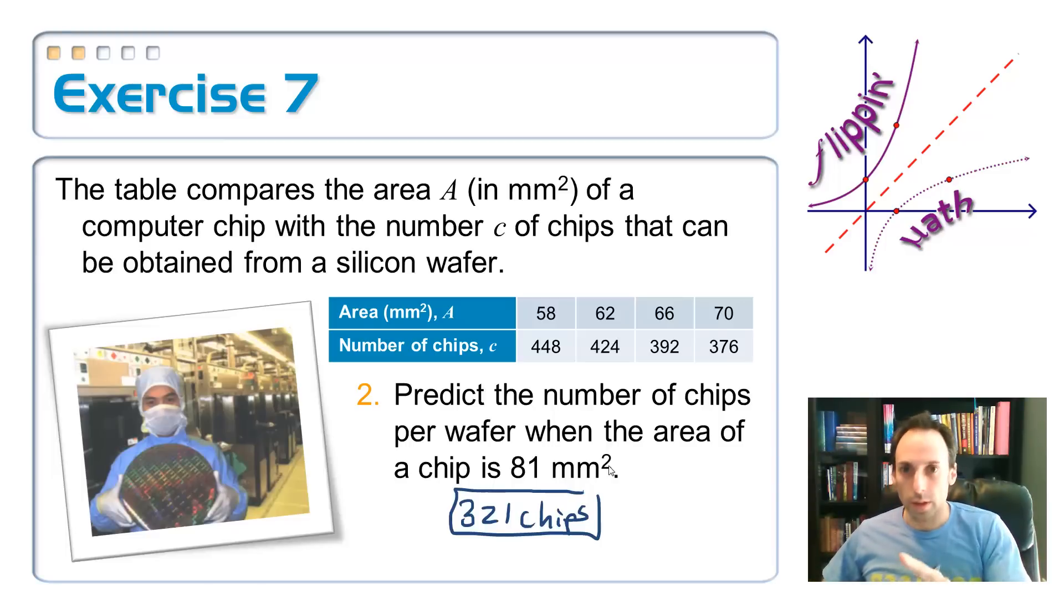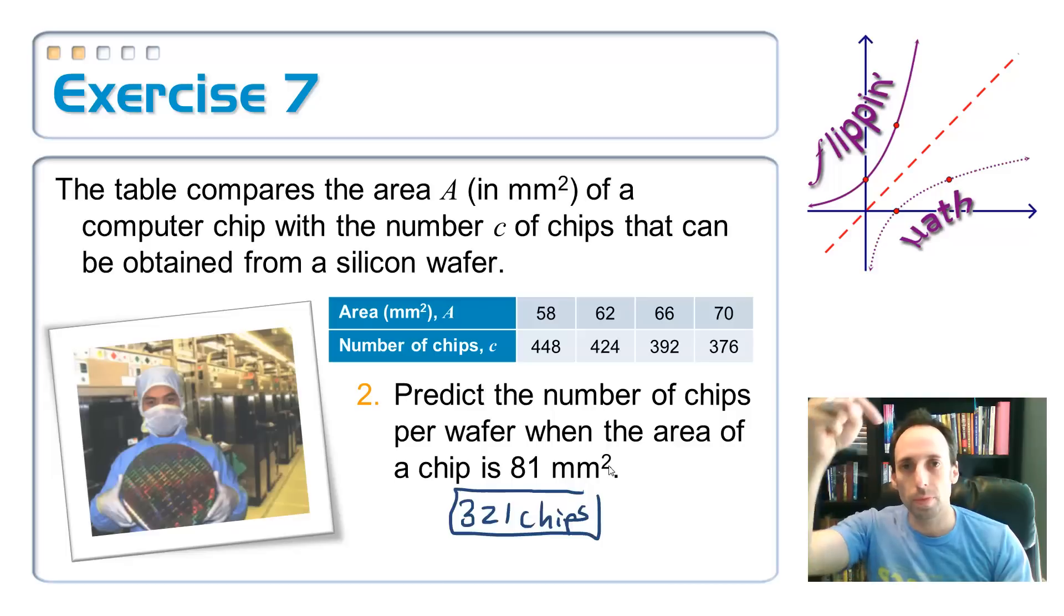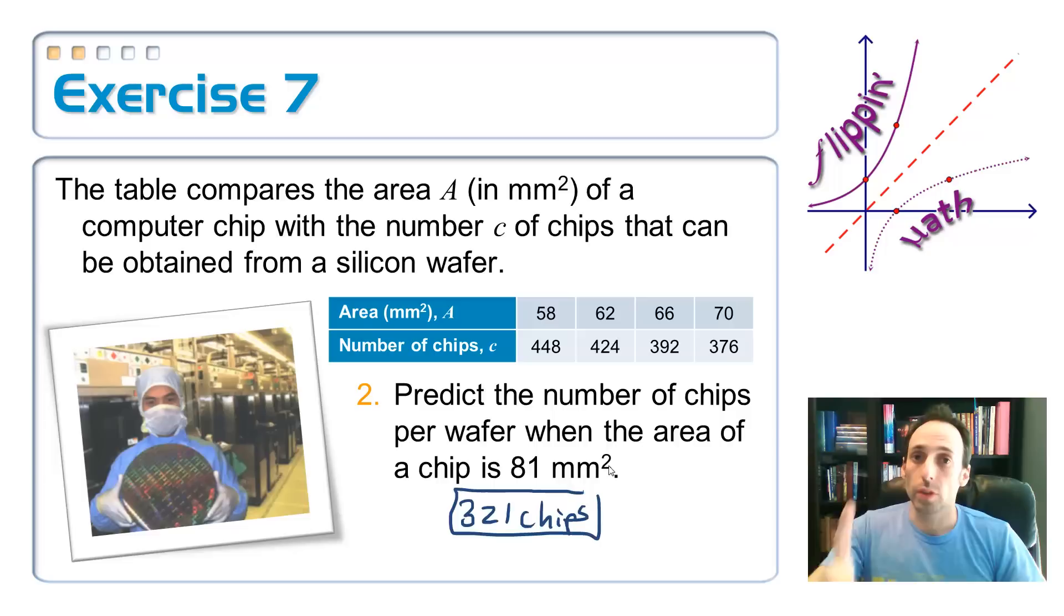I think that's the last one in this little bit. So, that's inverse variation is one's going up the other one's going down. Y is equal to A divided by X. So, the next one is about joint variation. Then I'll finish up objective one.